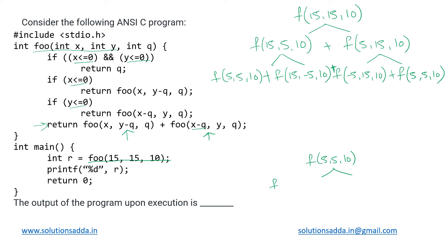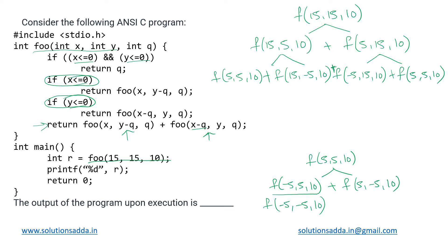For f(5, 5, 10): the first call is f(5 minus 10, 5, 10) = f(-5, 5, 10) and the next is f(5, 5 minus 10, 10) = f(5, -5, 10). For f(-5, 5, 10), x is less than or equal to 0 so the condition is satisfied and it returns f(-5, -5 minus 10, 10) = f(-5, -5, 10). Similarly for f(5, -5, 10), y is less than or equal to 0, so it returns f(5 minus 10, -5, 10) = f(-5, -5, 10).